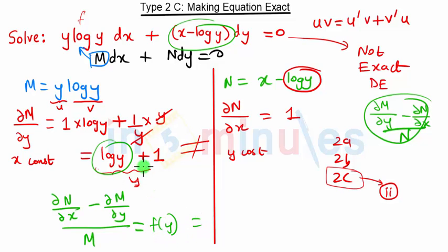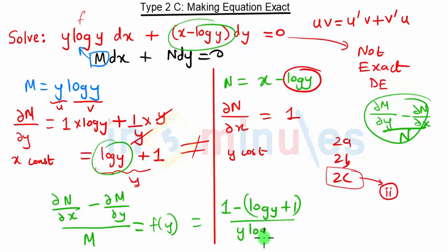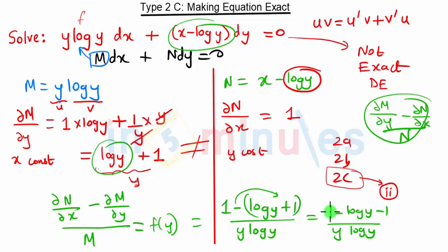Subtracting: 1 minus (log(y) + 1), divided by M where M = y·log(y). Taking the negative sign inside gives 1 minus log(y) minus 1, divided by y·log(y). The 1 and −1 cancel, and log(y) cancels, leaving −1/y. This is a function of y only.